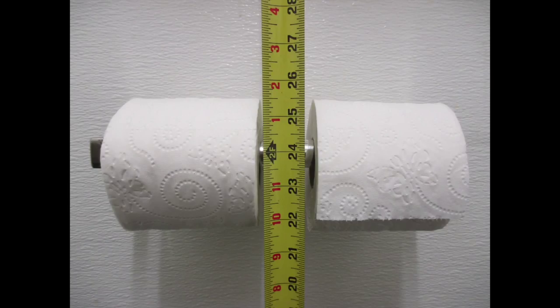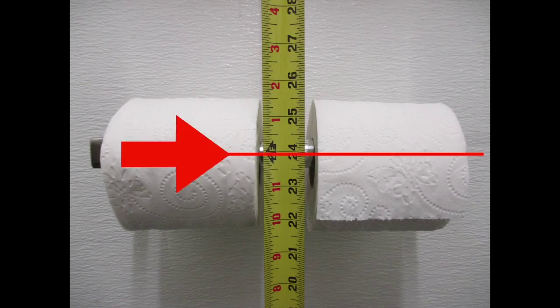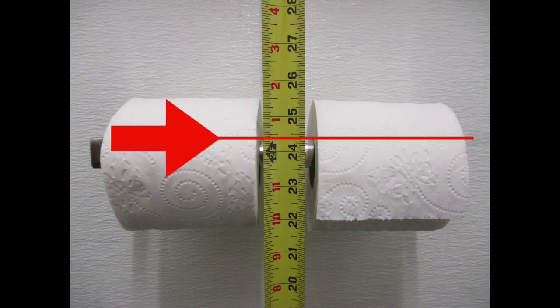Some would consider the measurement to be at the center line of the dispenser or the top of the spindle, given its more constant position regardless of the amount of toilet paper provided at any given time.